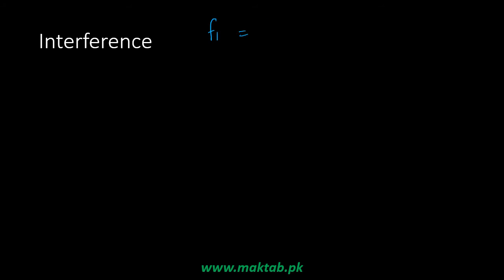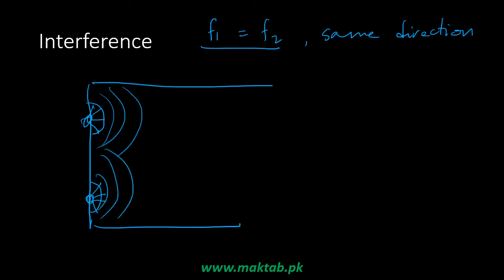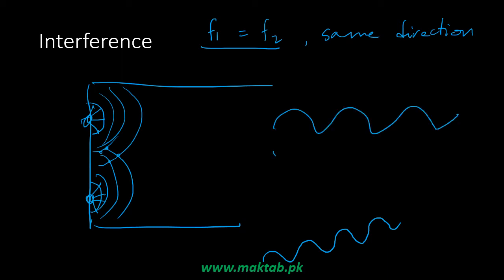Interference is a phenomenon in which two wave sources have the same frequency and both travel in the same direction. Consider a swimming pool with two motors producing ripples. Where both wave sources send their ripples to the same point, the waves superpose. At some points, a crest from one wave meets a trough from the other, they cancel out, and we have a flat surface — destructive interference.